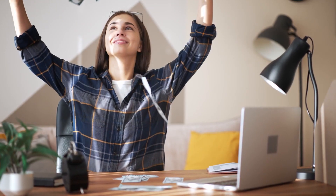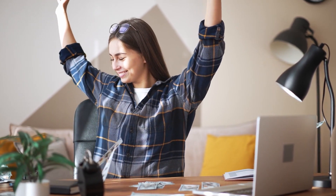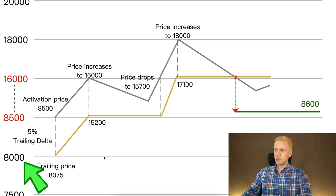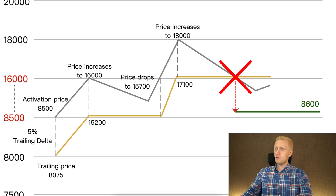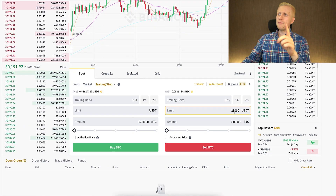This can give you more profits than a regular stop loss order. If you had set a regular stop loss at $8,000, it would stay there while Bitcoin goes higher, and it wouldn't capture the additional profits. With a trailing stop, as the price goes higher and higher, the stop loss follows and captures those profits when the price finally drops.